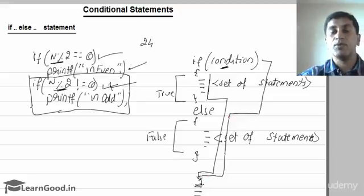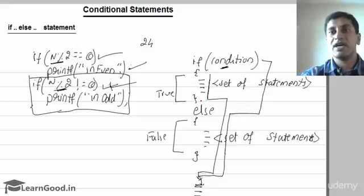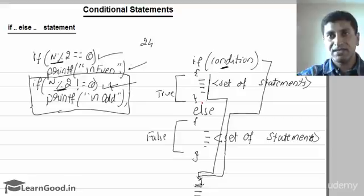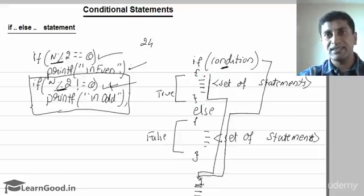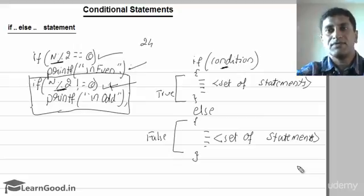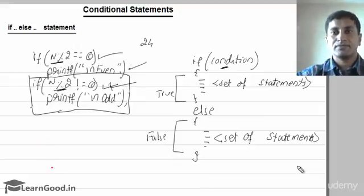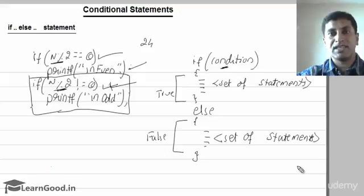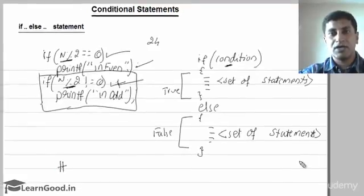In both cases there is a jump — if it is true, it executes the true part and does not execute the else part. Either the true part or the else part will get executed, not both. I'll take an example to check whether the given number is even or odd.